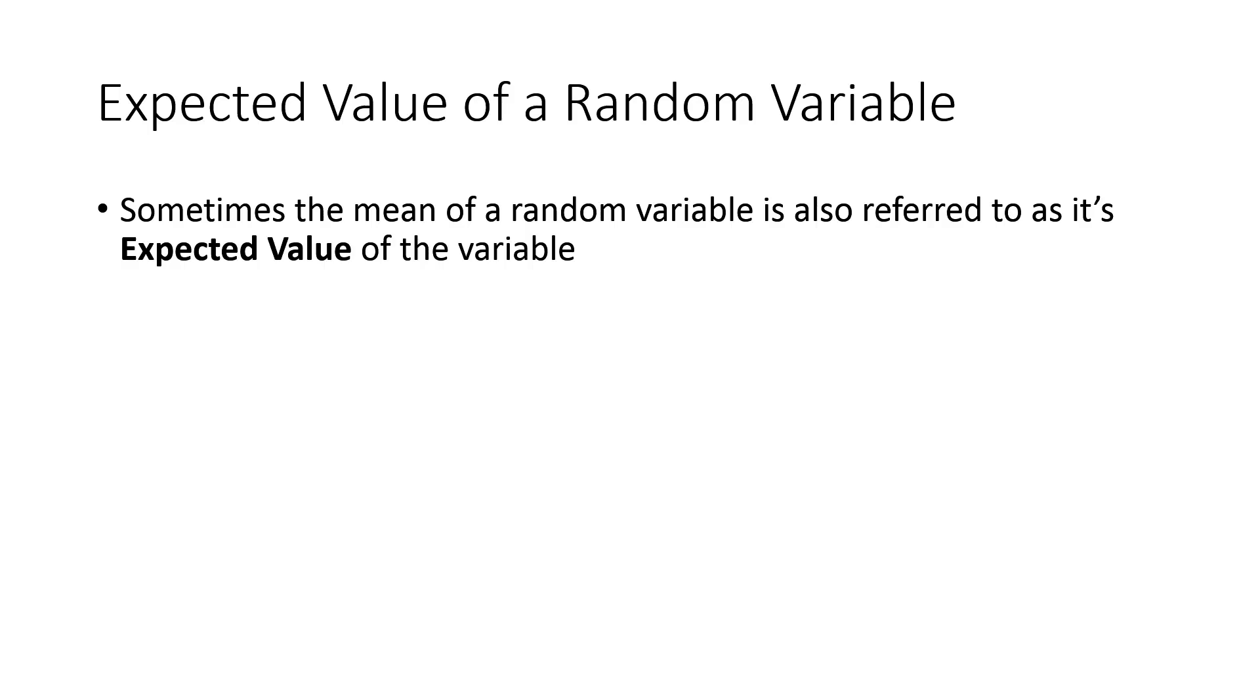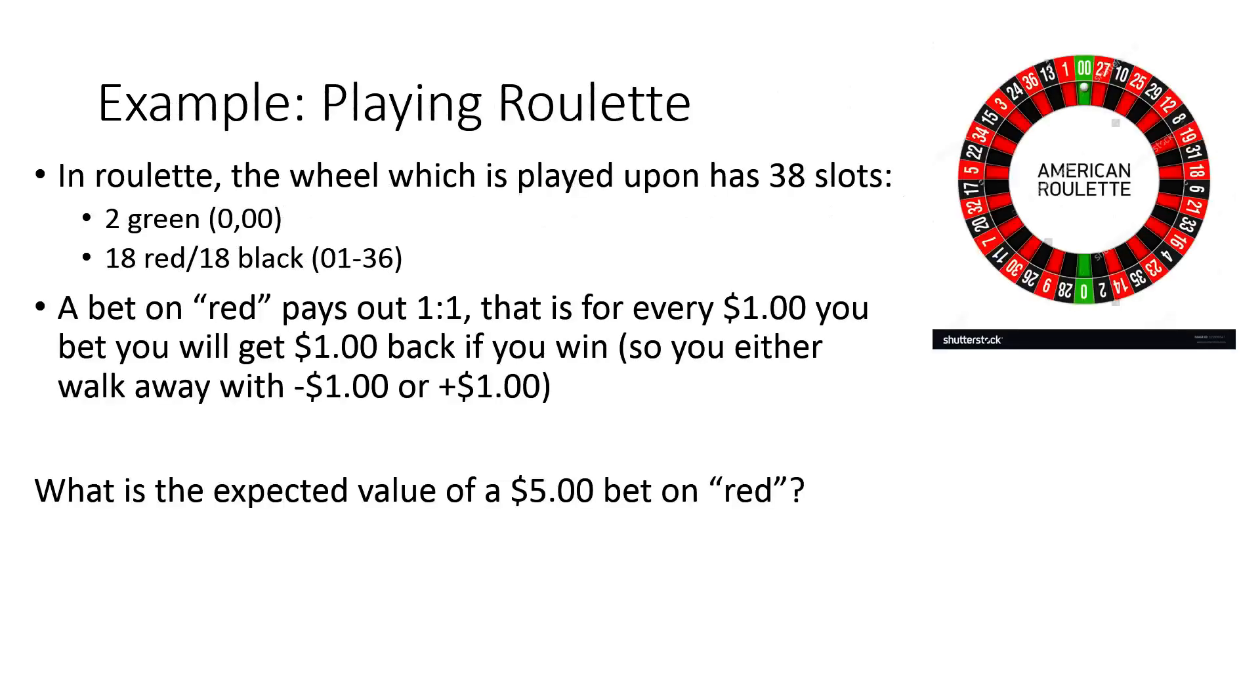So we could look at an example, like playing roulette. In roulette, you basically have a big old wheel, and the wheel has 38 slots. In all those 38 slots, you have two greens, so you can see here a zero and a double zero across from each other. And then you have alternating red and blacks, so there's 36 of those, 18 are red, 18 are black, and they're labeled one through 36. So this is what it looks like.